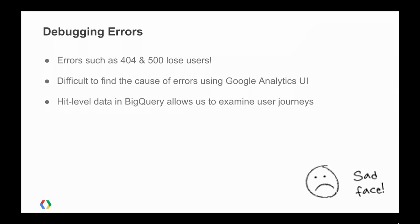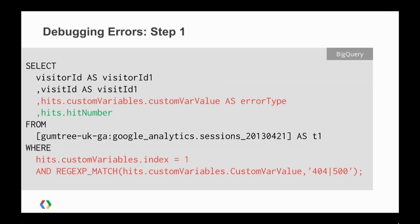Although there are some excellent navigational tools that help us page backwards and forwards through page views, some of our errors are actually caused by things that are not page views — things like Ajax requests, events that we're tracking. Now that we can actually get the hit-level data in BigQuery, we can page backwards and forwards through user journeys and really start to examine them. Here you can see a query requesting some of our analytics data. In red, we've identified our errors using a custom variable, and we're doing a regex match on that.